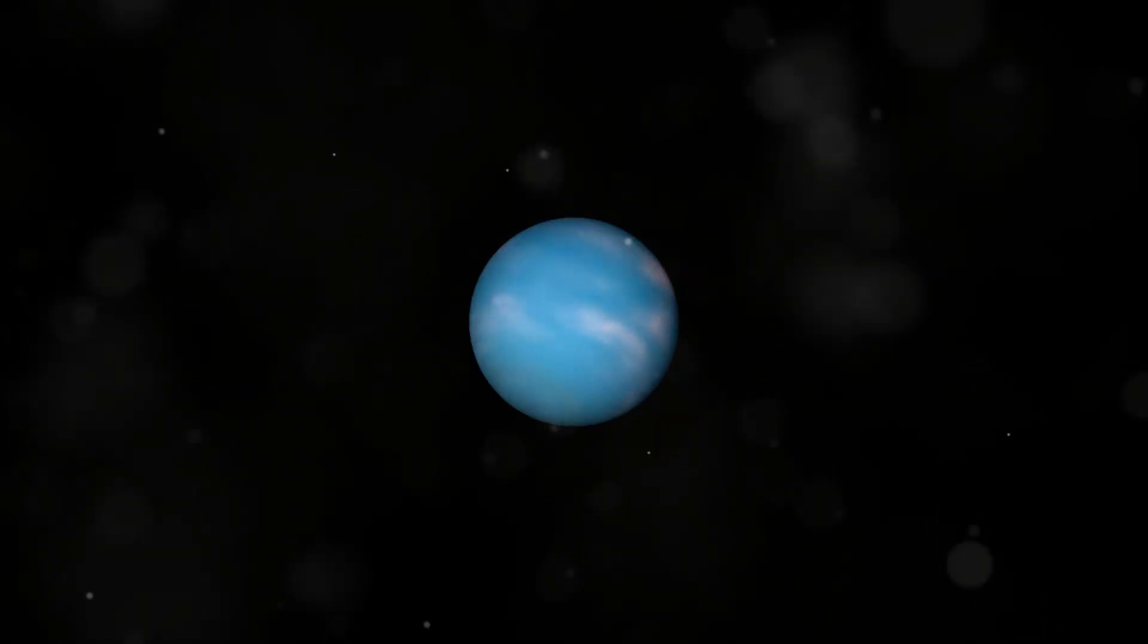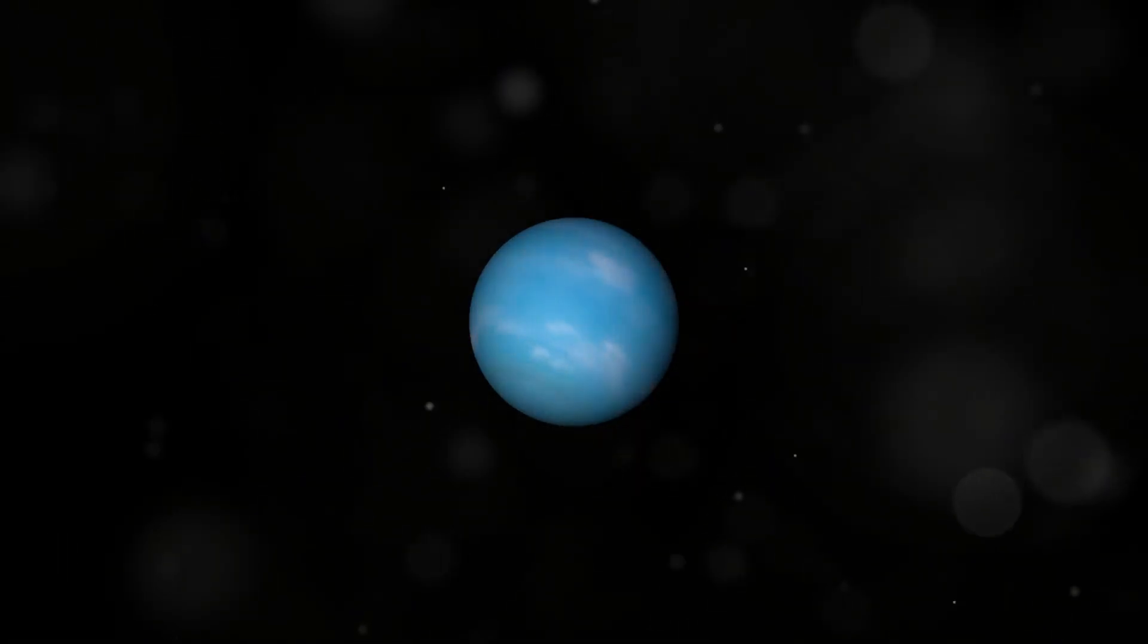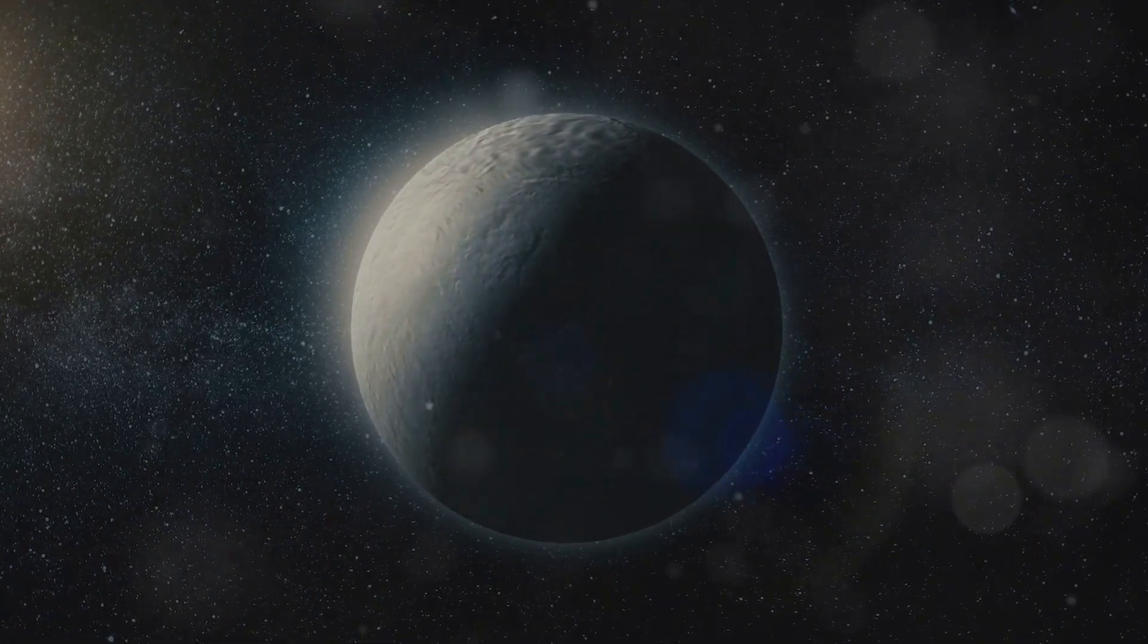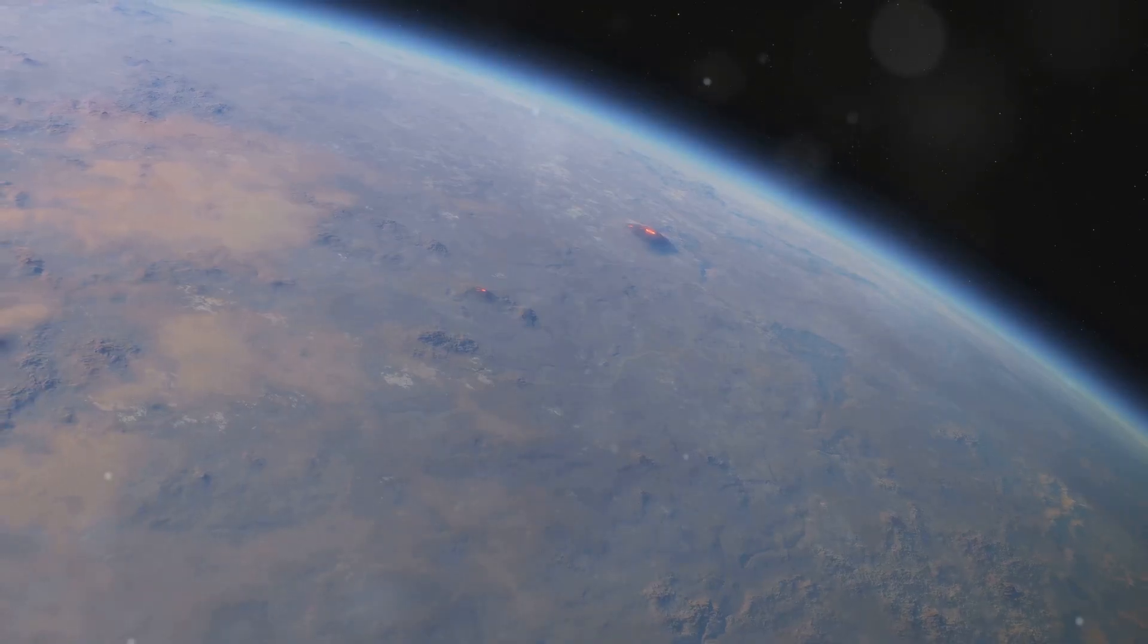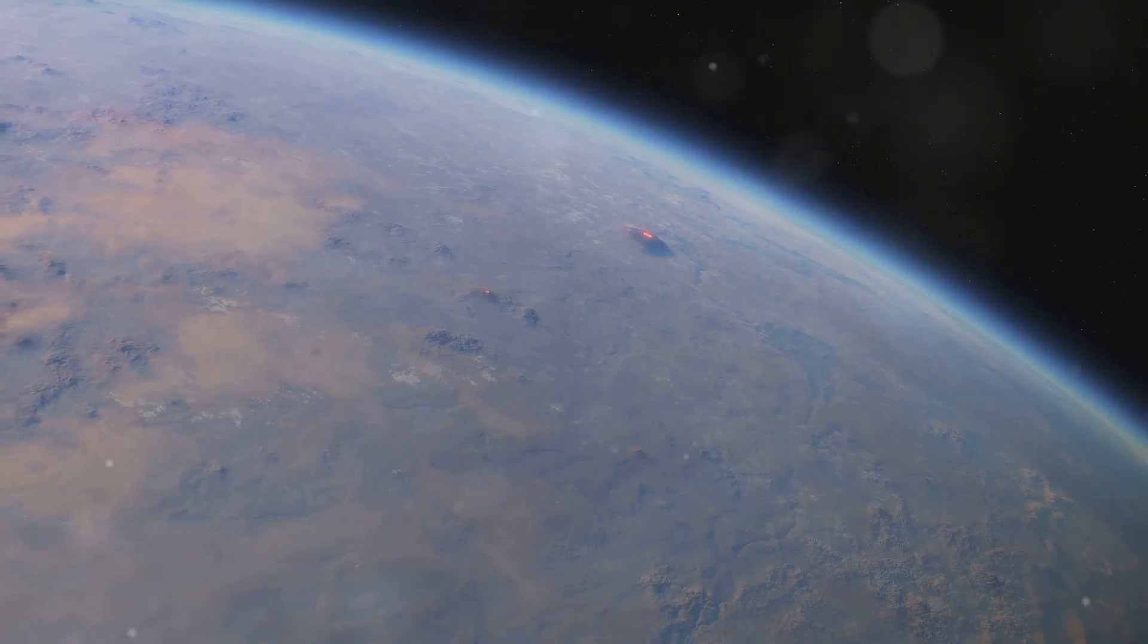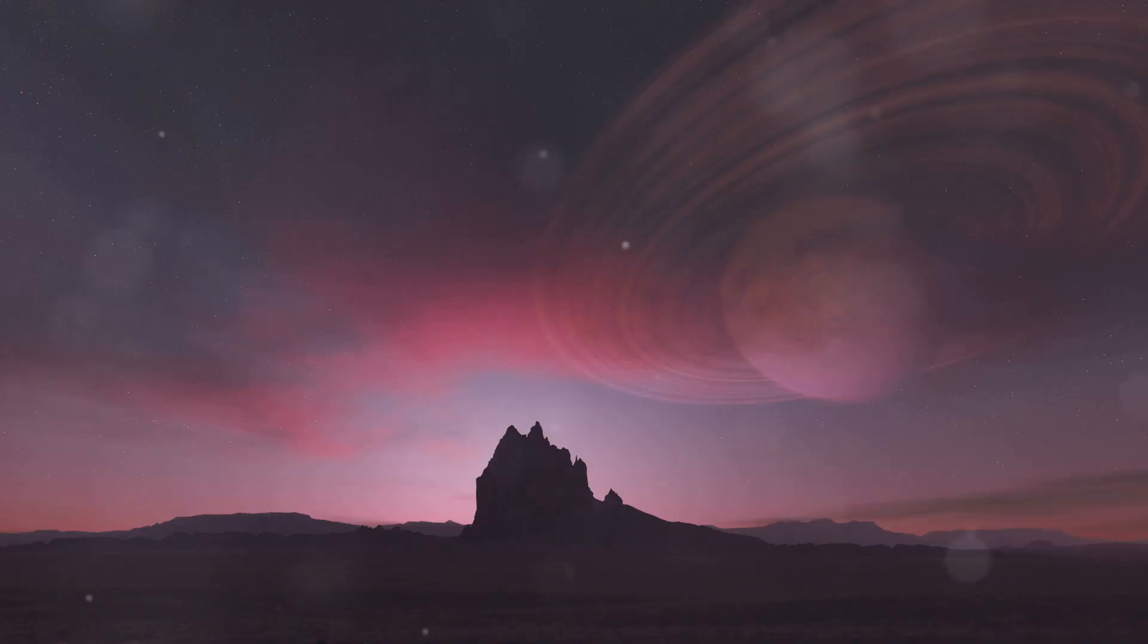This suggests a world with stronger gravity and potentially a denser atmosphere than Earth. Its orbit around the three stars is another fascinating aspect. While the exact details are still being studied, we know that it completes an orbit in a timescale that is significantly longer than an Earth year. While we can only speculate about what the surface might be like, the possibilities are endless.